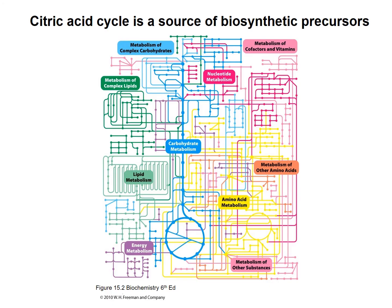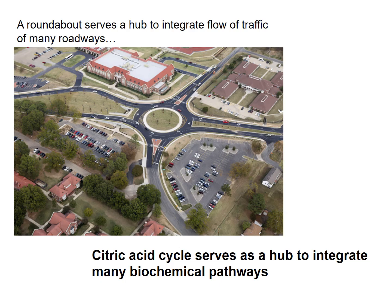While the citric acid cycle is often thought of as purely catabolic — breaking down macromolecules into simple units — it is also a source of biosynthetic precursors such as nucleotides, amino acids, and even lipid molecules. Like a roundabout serving as a hub integrating traffic from many directions, the citric acid cycle serves as a hub integrating both catabolic and anabolic biochemical pathways.